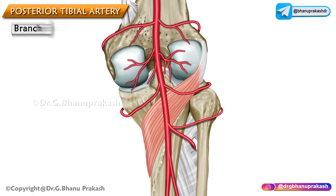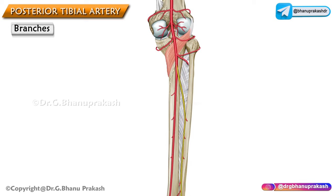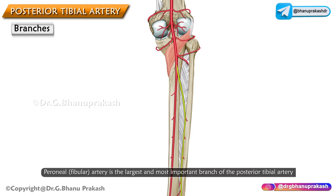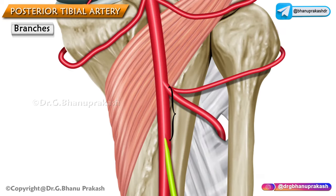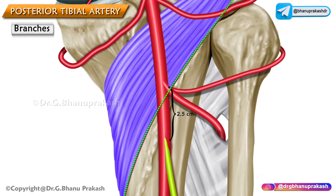What about the branches of the posterior tibial artery? The first one is the peroneal artery, which is also called the fibular artery. The peroneal or fibular artery is the largest as well as the most important branch of the posterior tibial artery, arising 2.5 centimeters distal to the inferior border of the popliteus.